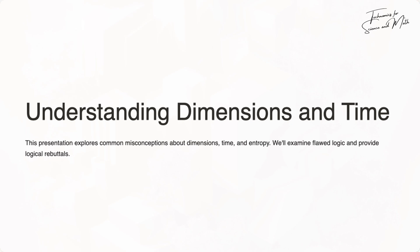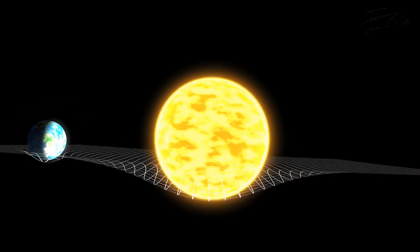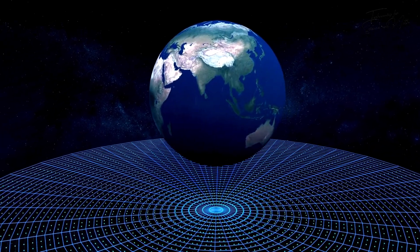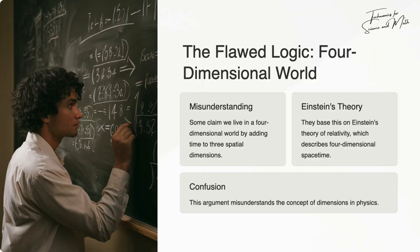Some people say we live in a three-dimensional world, but if we add time it's four-dimensional. They base this on Einstein's theory of relativity. According to relativity, our world consists of three spatial dimensions—x, y, z—and one time dimension, forming a four-dimensional spacetime.